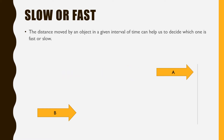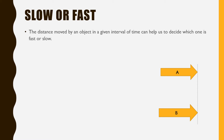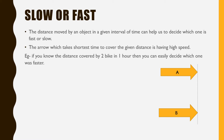A and B will reach a finishing point. A moved very slowly and B moved very fast, because A took a lot of time to cover a small distance, while B took less time than A to cover the given distance to reach the finishing point. The arrow that takes the shortest time to cover a given distance has the highest speed. If you know the distance covered by two bikes in one hour, you can easily decide which one was faster.